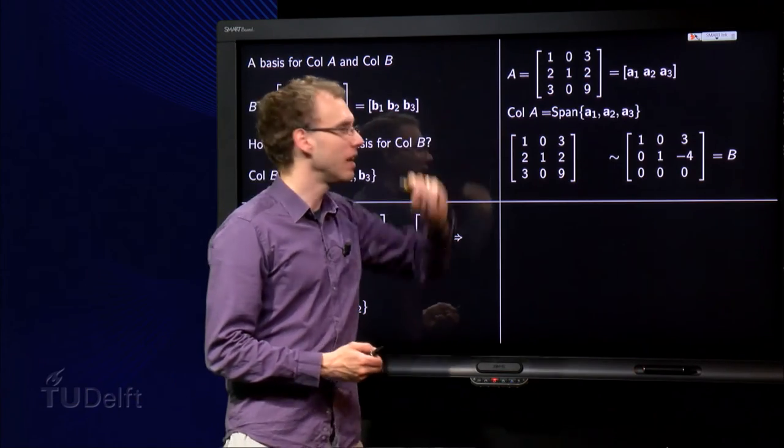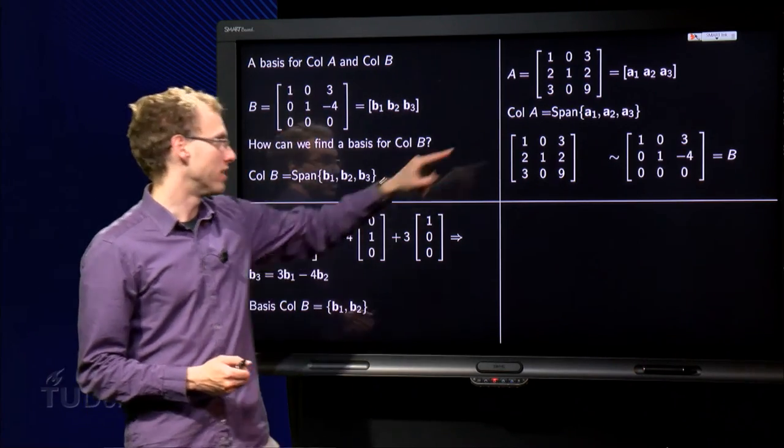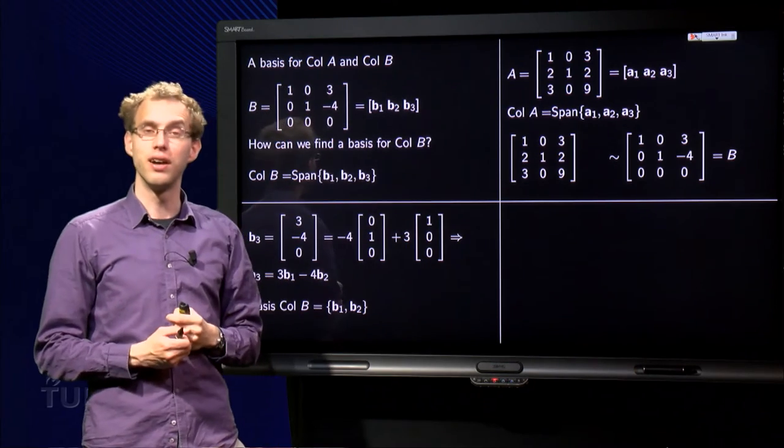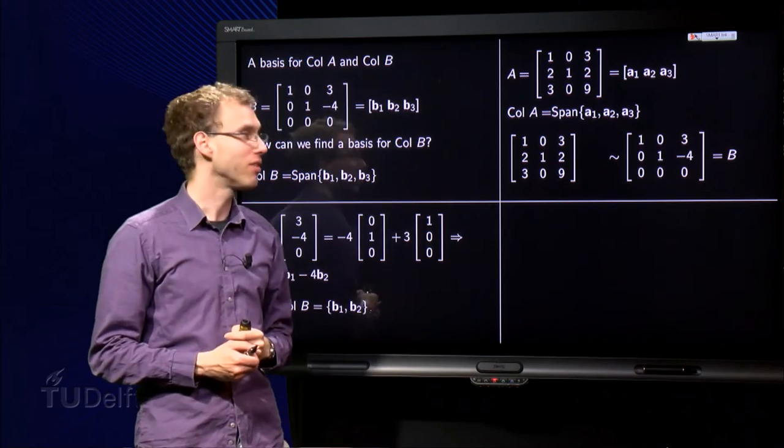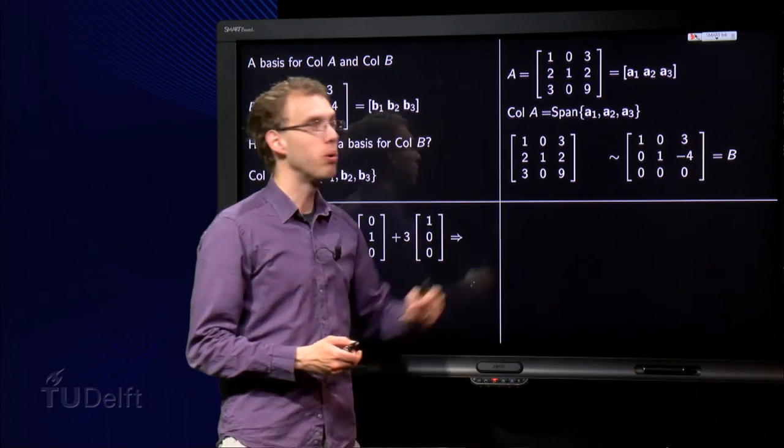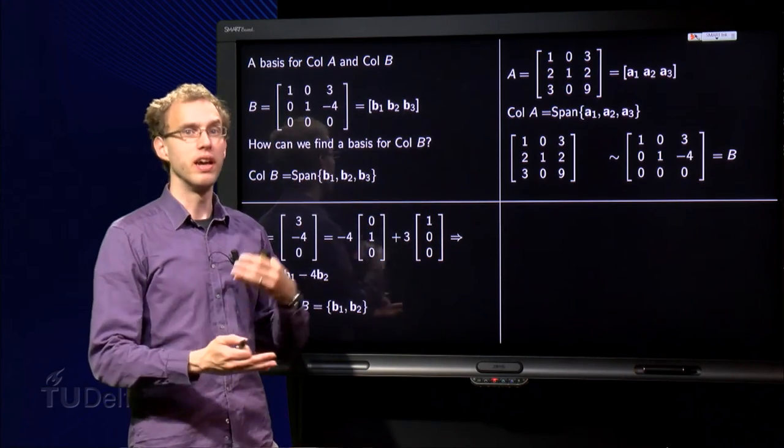So let us take the matrix over here. A is definitely not in reduced echelon form, it consists of the columns a₁, a₂ and a₃. So we know that col A is the span of a₁, a₂ and a₃,